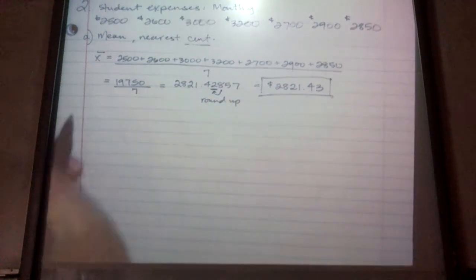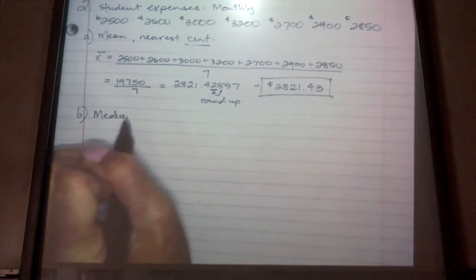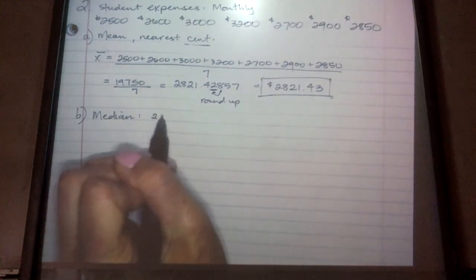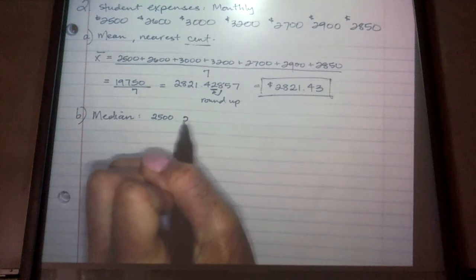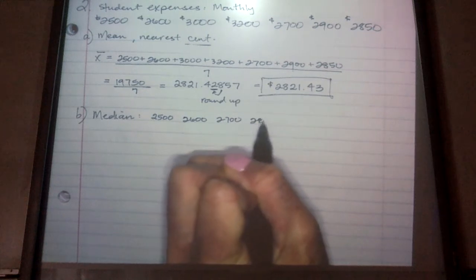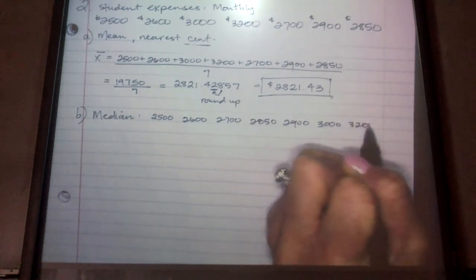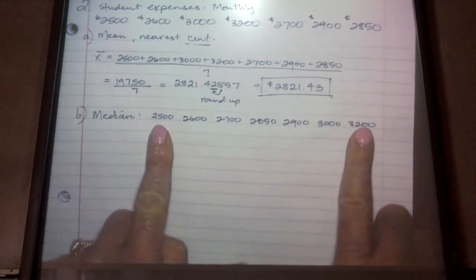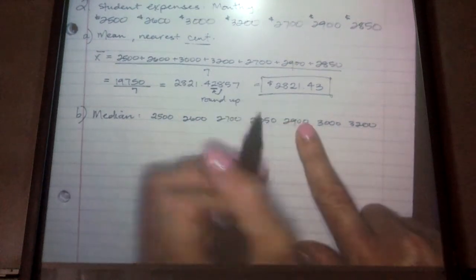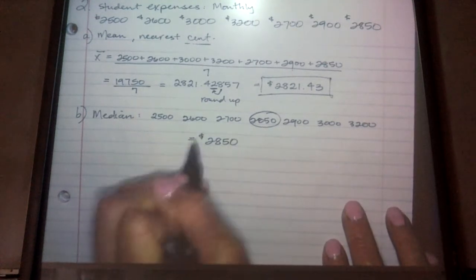B, what is the median? So if I list these in numerical order, the smallest is 2,500, and then 2,600, 2,700, 2,850, 2,900, 3,000, 3,200. So median, start on the outside and walk your way in. So one, two, oh, this one's nice. There's exactly one in the middle, so $2,850 is our median.